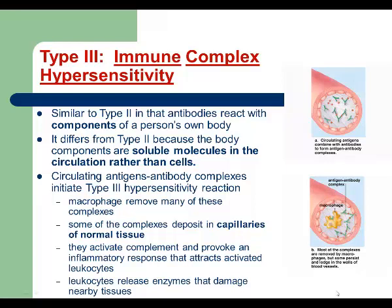We continue with type 3 hypersensitivity reactions, also called immune complex hypersensitivity. Type 3 hypersensitivity reactions and their pathogenesis are very similar to type 2. The same antibodies are involved — IgGs and IgMs. In type 2, the immune system makes antibodies against its own cells. In type 3, the immune system makes antibodies against antigen-antibody complexes.